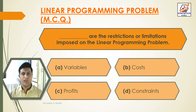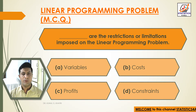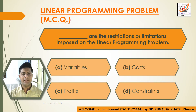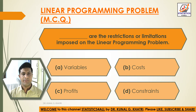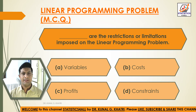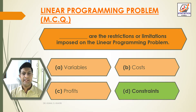Question 7: Dash are the restrictions or limitations imposed on the linear programming problem. Option A: Variables. Option B: Costs. Option C: Profits. Option D: Constraints. Answer: Option D — Constraints are the restrictions or limitations imposed on the linear programming problem.